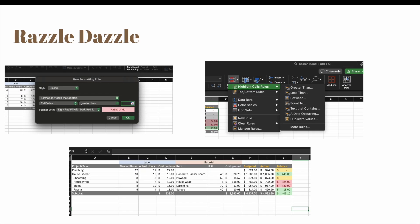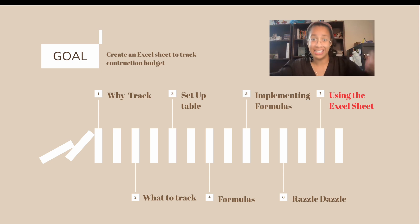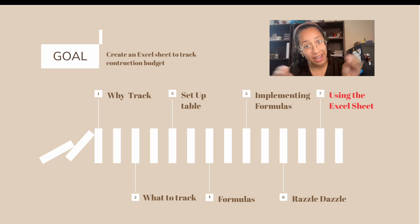The razzle-dazzle. Using colors and organized layouts in Excel sheets significantly improves readability. All the numbers can be a bit dizzying, so color coding sections helps quickly identify categories such as labor and materials. The visual distinction aids in overseeing budget components without confusion, allowing for timely interventions if costs exceed expectations. Now I've shown you why to track, what to track, how to set it up, the formulas, implementing the formulas, and the little razzle-dazzle — but what does this all really look like when you have your sheet together?